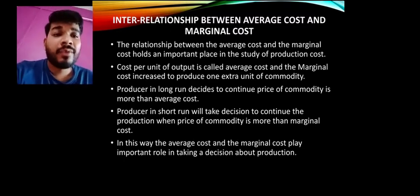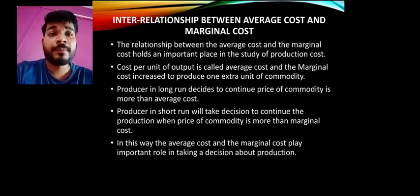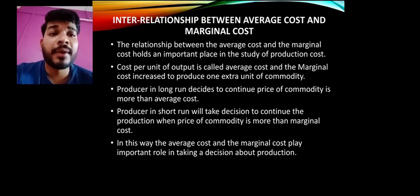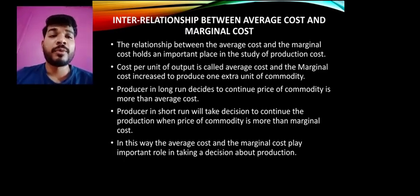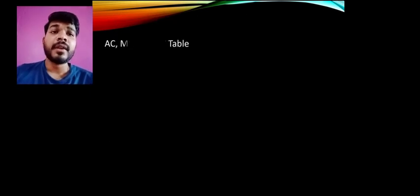Average cost and marginal cost together play an important role in taking production decisions. By analyzing both, we can determine how much production should be done in the short run and the long run. This helps the producer decide the optimal level of output.